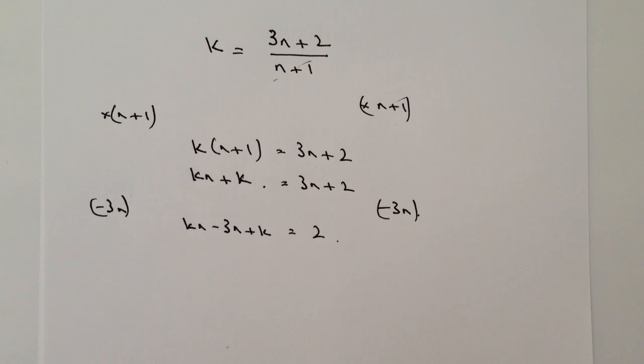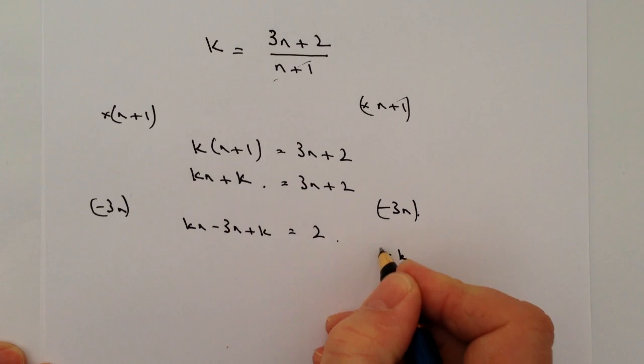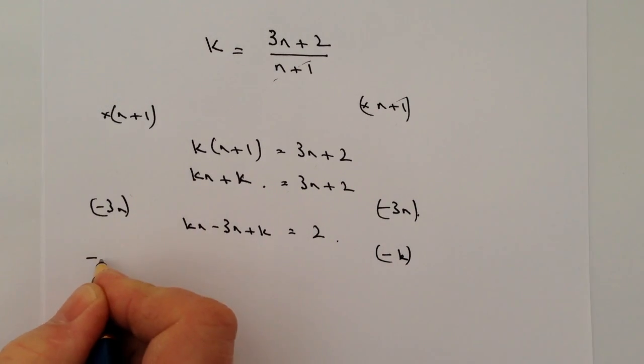Alright, then I need to get this k over towards my right hand side here. So the way I'm going to do that is I'm going to minus k from both sides.